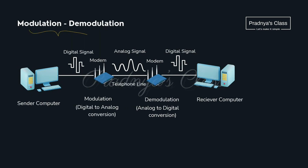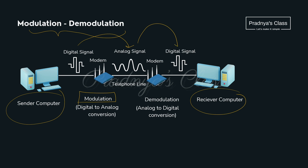Look at the process of modulation and demodulation. At the sender's computer, digital signals get converted to analog — this process is known as modulation. At the receiver's computer, the analog signal gets converted back to digital — this process is known as demodulation. So modulation is digital to analog conversion, and demodulation is analog to digital conversion.